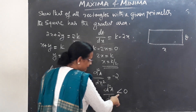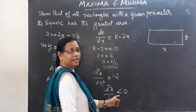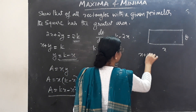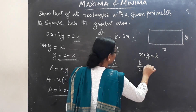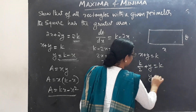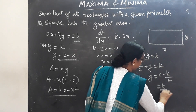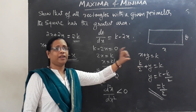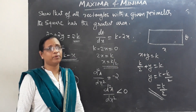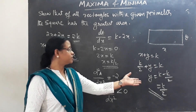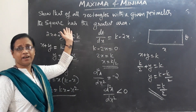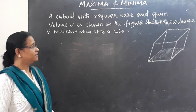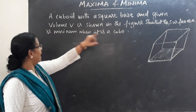Since d²A/dx² is negative, this gives the greatest area. Substituting x equals k/2 into x plus y equals k gives y equals k/2. So x equals y equals k/2, proving the rectangle is a square with the greatest area.